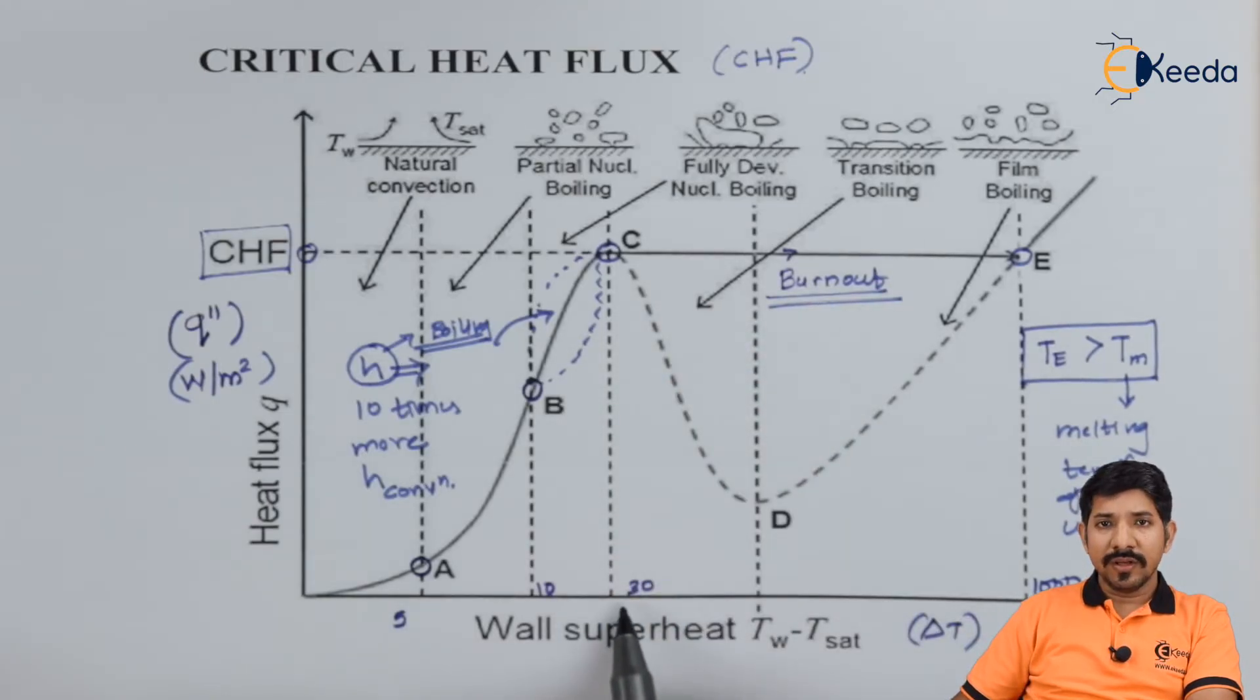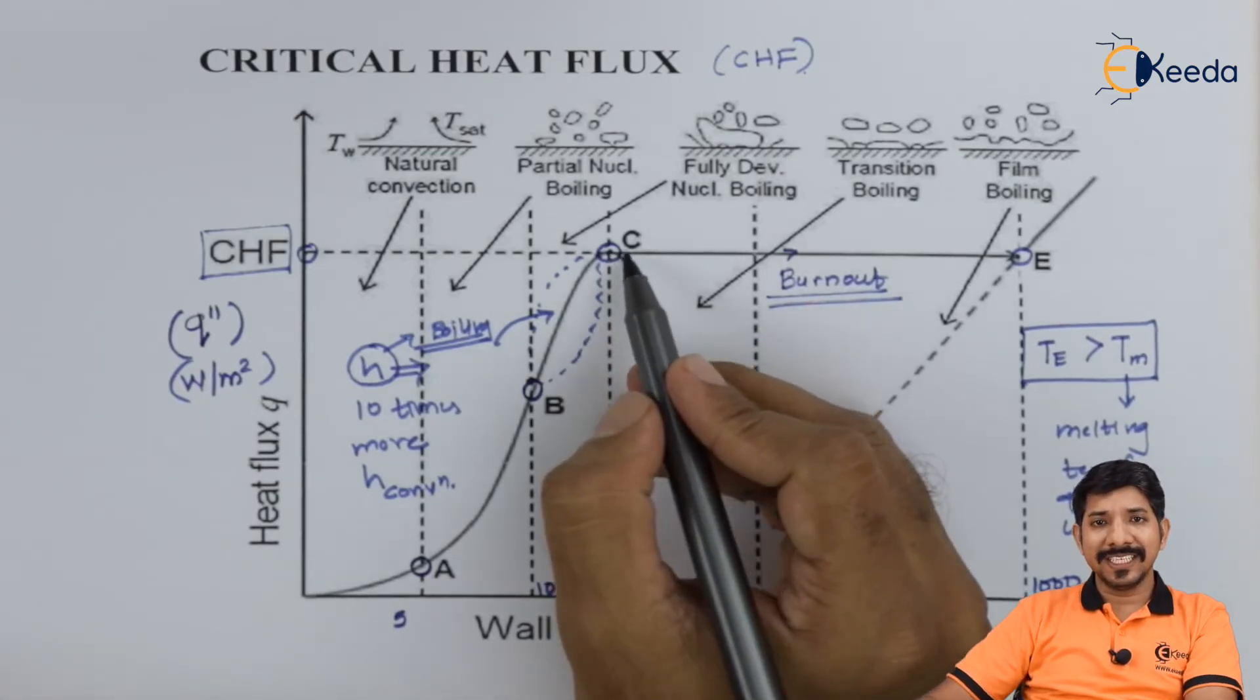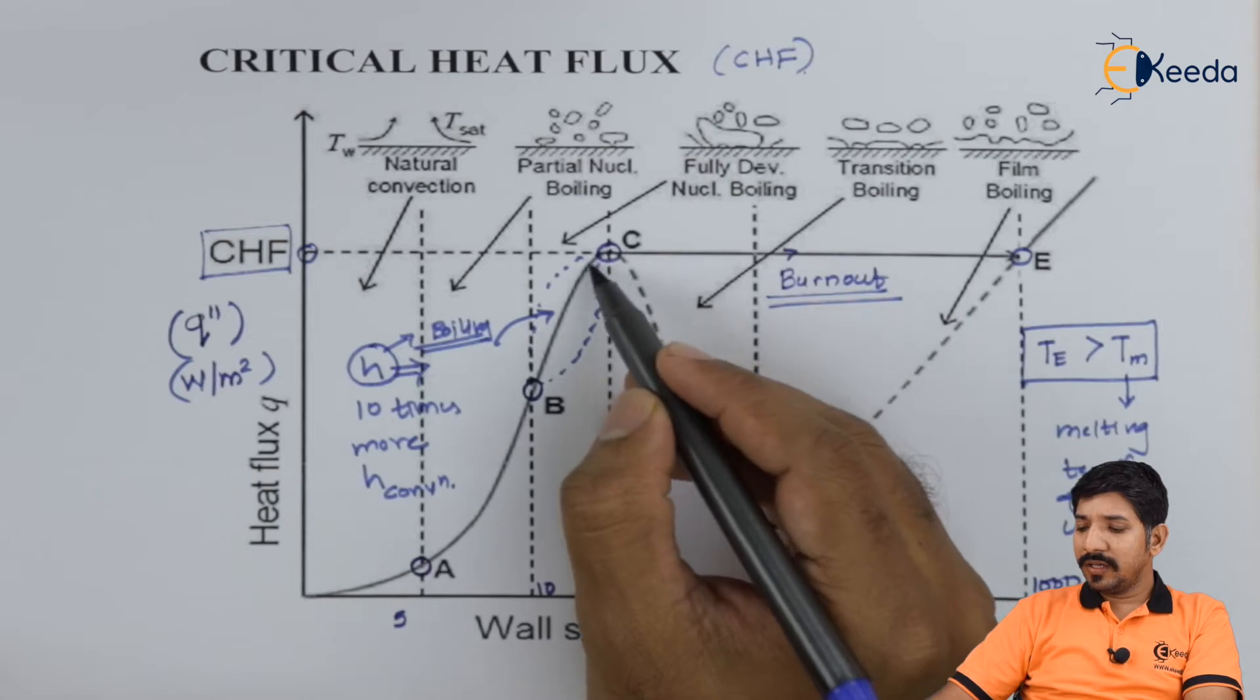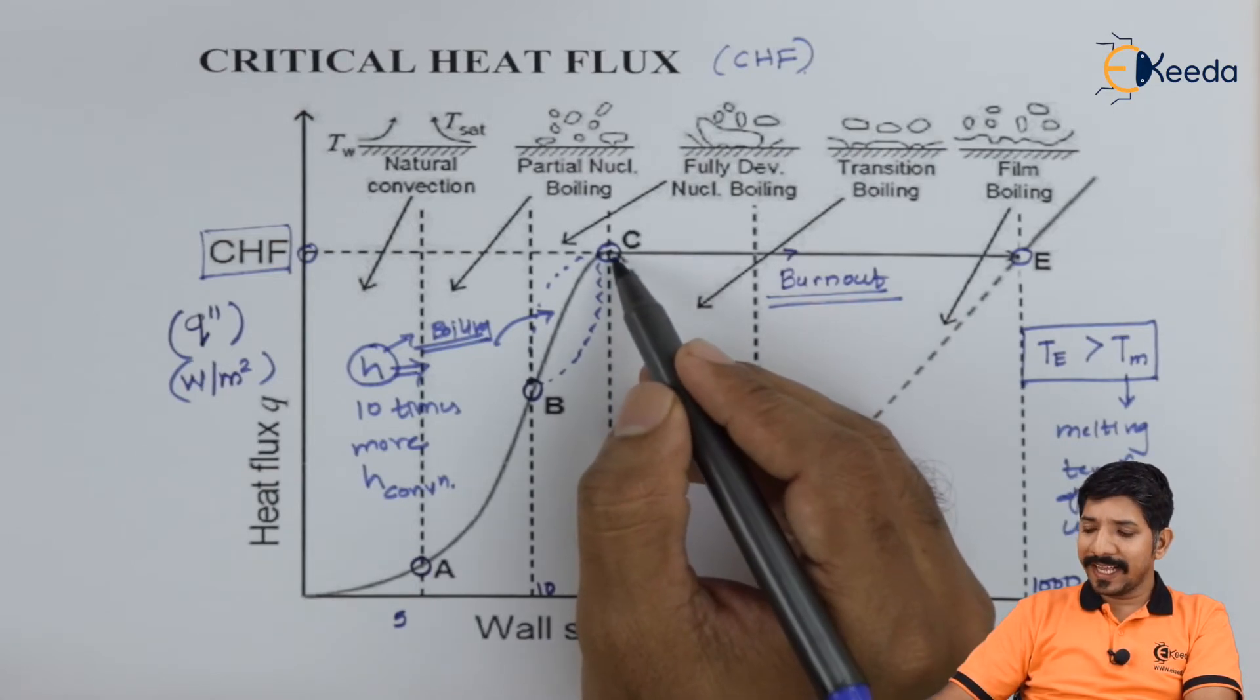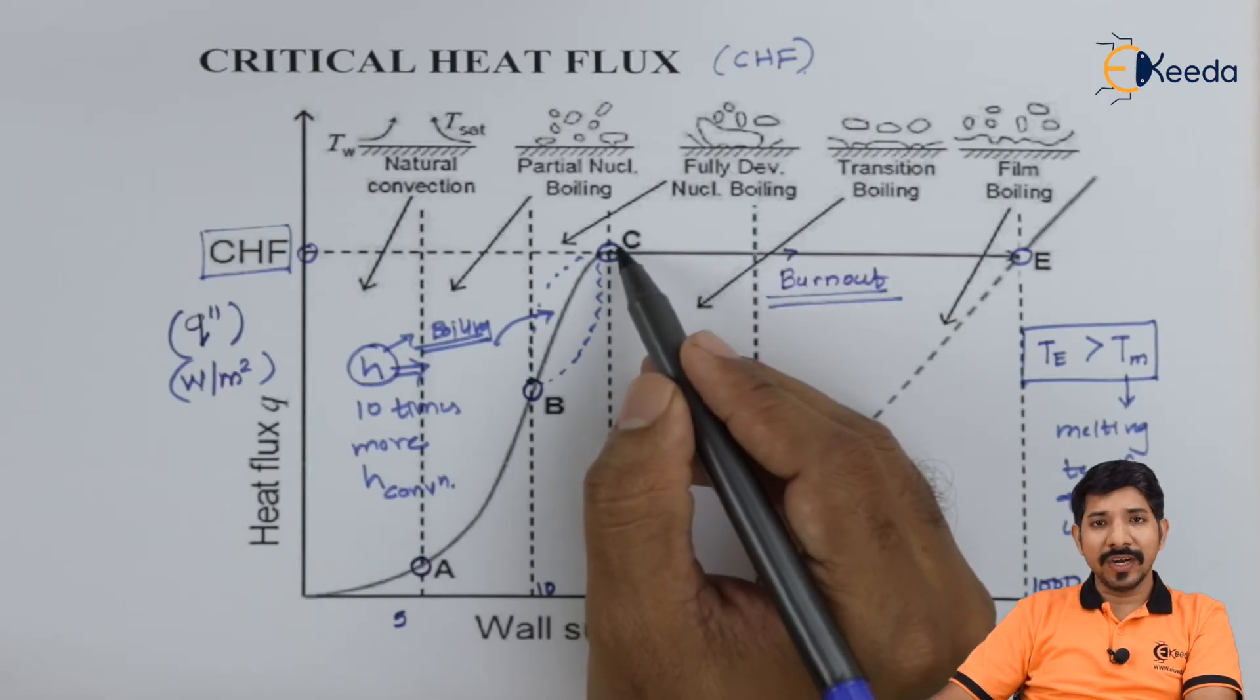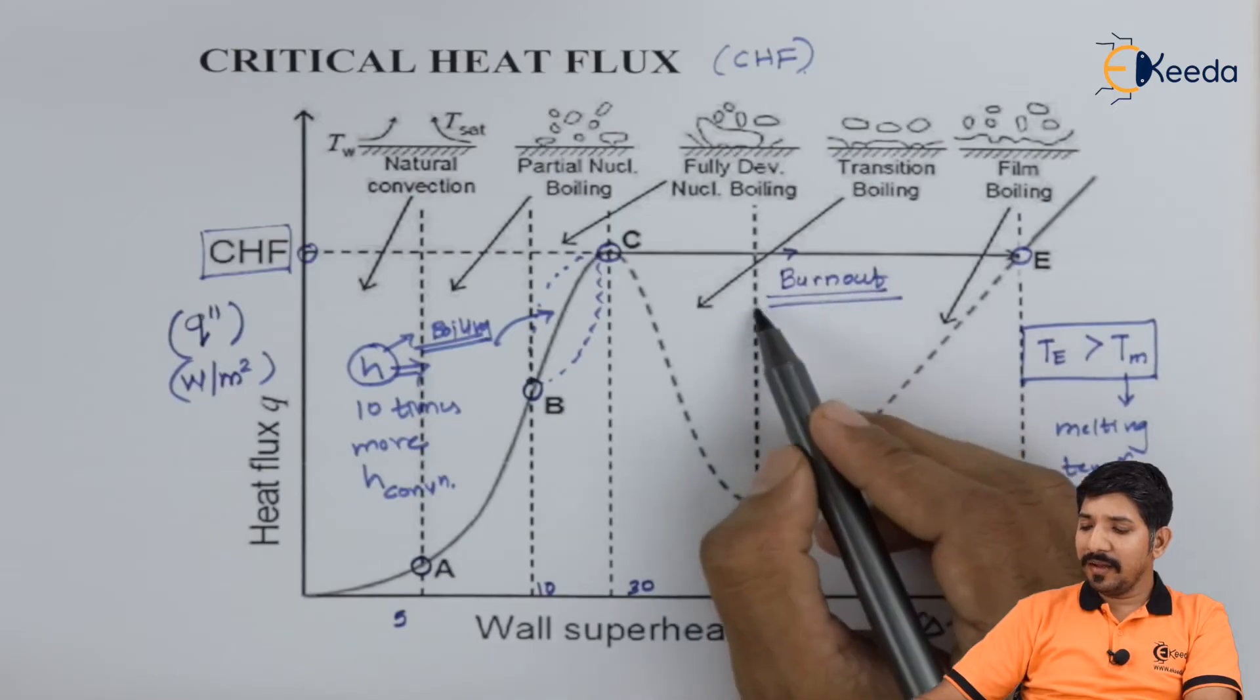So if we know what is the CHF value for the given fluid combination, fluid and wire combination, then we can make sure that we have not reached to this point. They call this point as burnout.